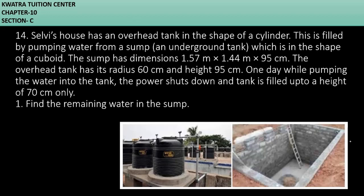Let's start with question number 14. It says Selvi's house has an overhead tank in the shape of a cylinder. This is filled by pumping water from a sump which is in the shape of a cuboid.